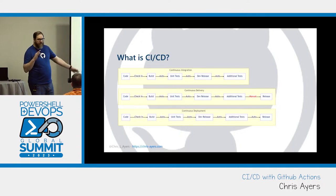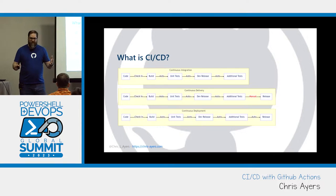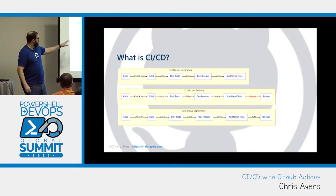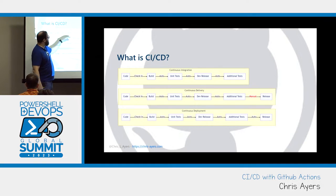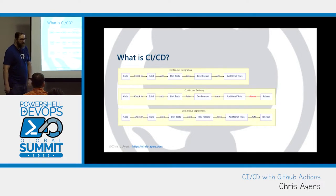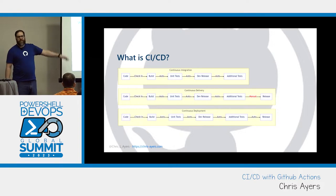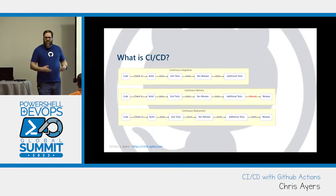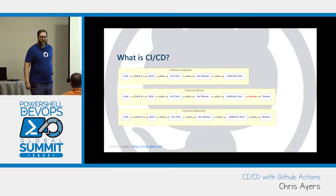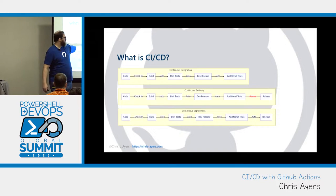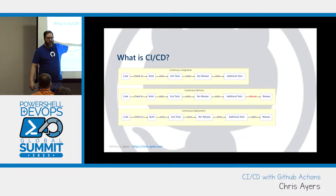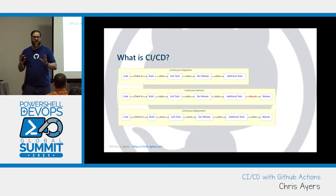CI, CD — let's talk about that. CI everyone knows: continuous integration. Maybe we do some code, we check in, we build, run unit tests, maybe release out to dev, run acceptance tests. Something like that. Pretty common workflow for developers. When we talk about CD though, do we mean continuous delivery? Or do we mean continuous deployment? Because those are actually two separate things that a lot of people don't always think about.